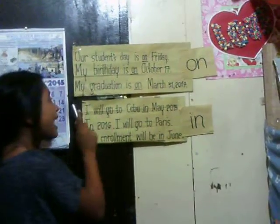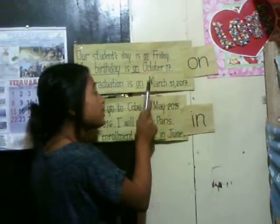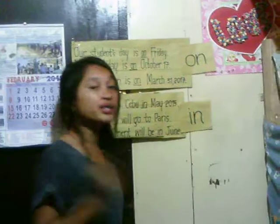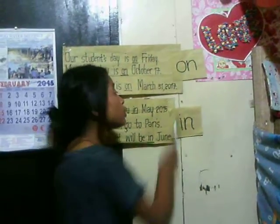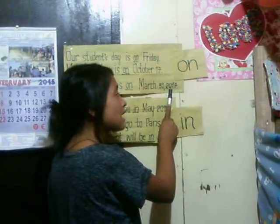The third one is when we specify the month, the day, and the year. For example, my graduation is on March 31st, 2017. March is our month, 31st is our day, and 2017 is our year. And on is the right form to use.